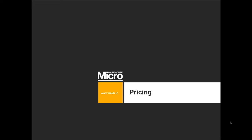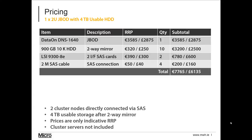How much cheaper? Let's look at a few pricing scenarios — all indicative retail pricing. First, a simple single-JBOD solution: a DNS1640 with four terabytes of usable 10K hard disk capacity. We'll put in 10 900GB drives with a two-way mirror, plus two 12Gbps SAS cards and four SAS cables. That solution costs just over €7,700 or just over £6,100. Note this does not include the cost of any servers, which is an additional cost — MicroWarehouse does not distribute servers.